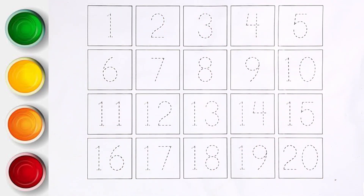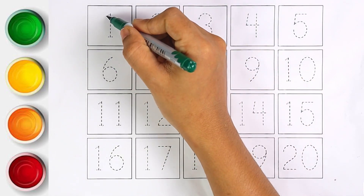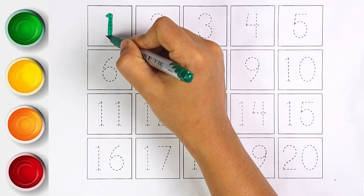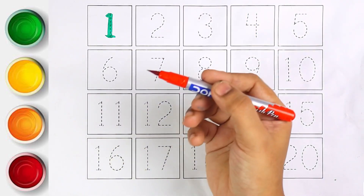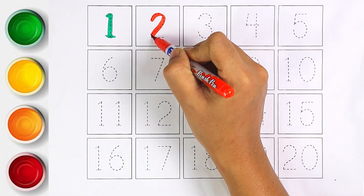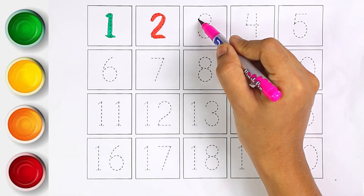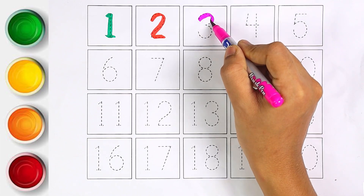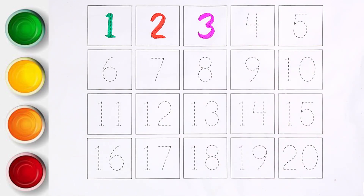Let's start writing numbers. Green color — number one. Red color — number two. Pink color — number three.